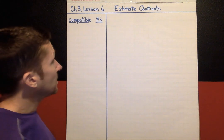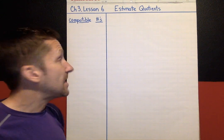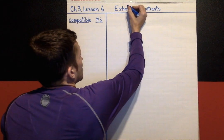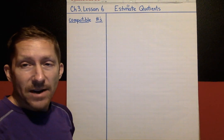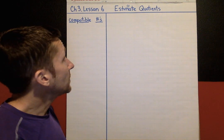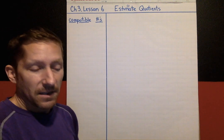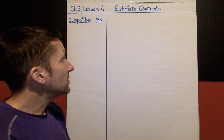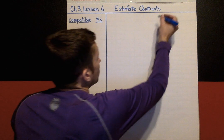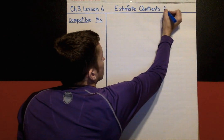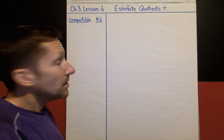The word 'estimate' means we're not solving for exact answers today. I'm going to put a little double wavy line next to estimate, meaning your answers are going to be close to the exact answer but not the exact answer. The word 'quotient' tells me we are working with division — a quotient is an answer to a division problem.